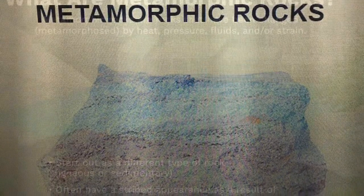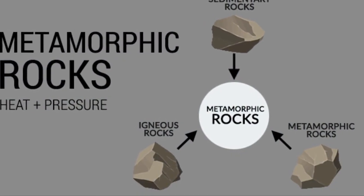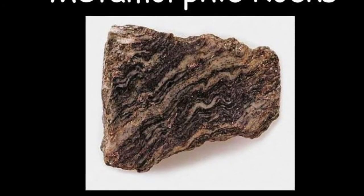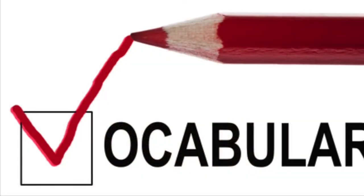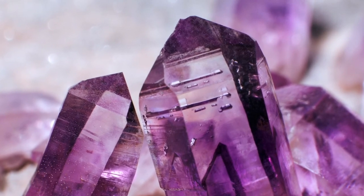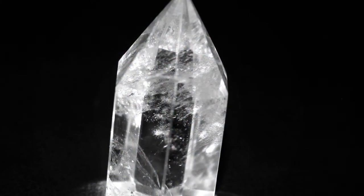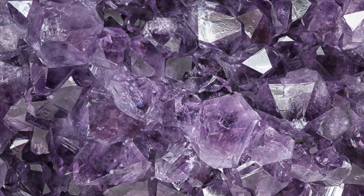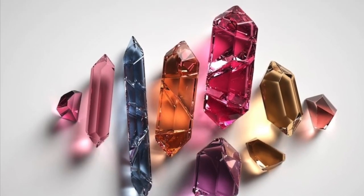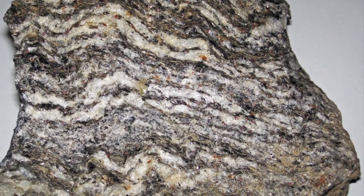Metamorphic rocks. Now we're going to look at our vocabulary words. Our first word is crystal. Crystal is an evenly shaped mineral. The next word is pronounced gneiss. Gneiss is a type of metamorphic rock.